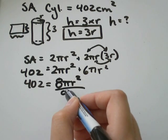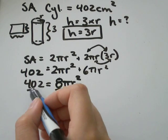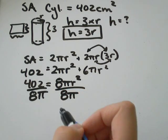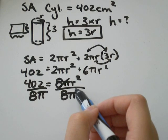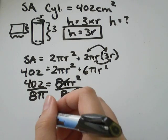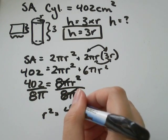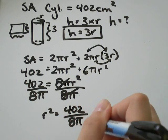To solve for r, you can divide both sides by 8π. And then the 8π's will cancel. You'll be left with r². So r² equals 402 divided by 8π.